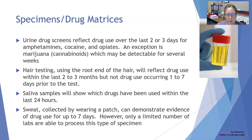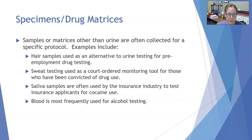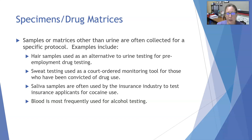Urine and hair are the two most used sample types for drug testing. Hair samples are used as an alternative to urine testing for pre-employment drug screening and pre-admission into professional programs, to identify habitual drug users. Sweat testing can be done as a court-ordered monitoring tool for those convicted of drug use who are incarcerated or in the legal system. Saliva samples are often used by the insurance industry to test applicants for cocaine use. Blood is the most frequently used sample for alcohol testing and blood alcohol levels — for example, to confirm a breathalyzer test. That wraps up our samples and testing for drugs.